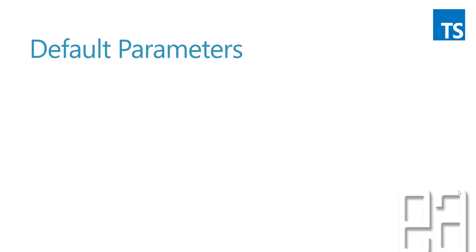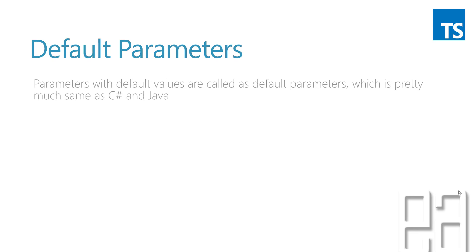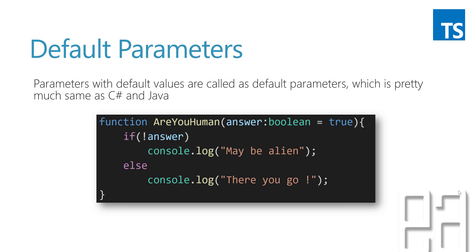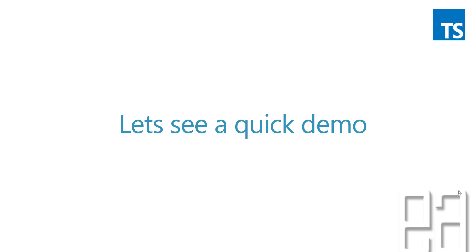For the default parameter, it's pretty much the same as in C# and Java — passing a default value to the parameter. It looks like this: a parameter `answer` of type `boolean` set to `true` by default. So even if you don't pass anything, it will go to the `else` statement. If you pass `false`, it will go to the first `console.log` which says 'maybe alien'. Let's quickly see a demo and understand how things work.